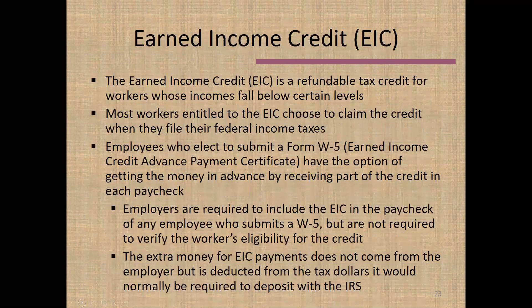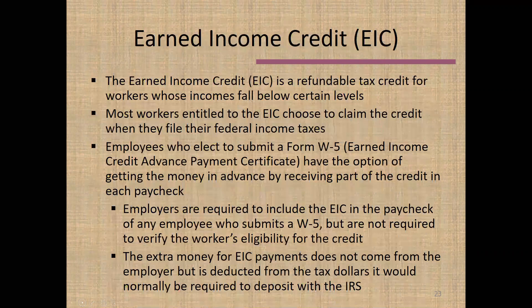Let's talk about the Earned Income Credit. This is important for many employees, especially in the hospitality industry who are relatively low-compensated. They may be eligible for the Earned Income Tax Credit, which benefits them. There are two ways to take advantage of it: they can claim the credit when filing their federal income tax return in April, or they can submit an Earned Income Credit Advanced Payment Certificate — Form W-5 — which allows the worker to receive a portion of the credit before the end of the year. If the employee submits this form, the employer must include that payment in the worker's paycheck.